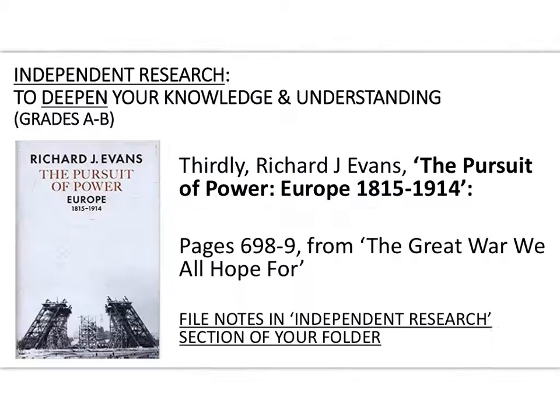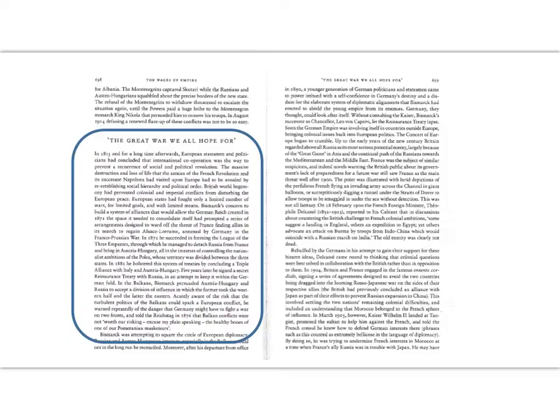Thirdly, Evans in his book 'The Pursuit of Power' — the section called 'The Great War We All Hope For' — covers the foreign policies of the great powers in the final years of the 19th century and the first 14 years of the 20th century leading to the outbreak of war in 1914. There's a short extract on screen — a screenshot of the opening paragraph — which we'll come back to.